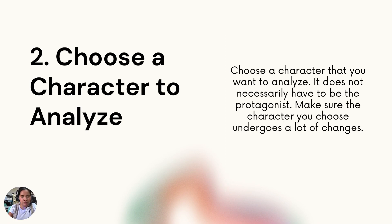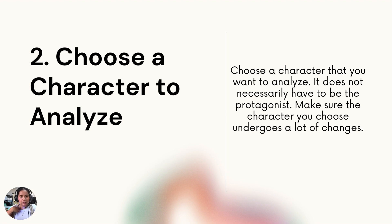The next step is you need to choose a character to analyze. It really depends on the conformity of it, so you need to look into who you're going to analyze — what is the name of the character — so that it's easy for you to look into how that character revolves in the story and how the other characters affect the character being analyzed.